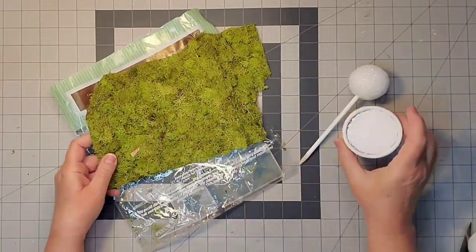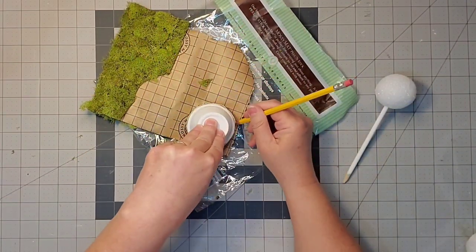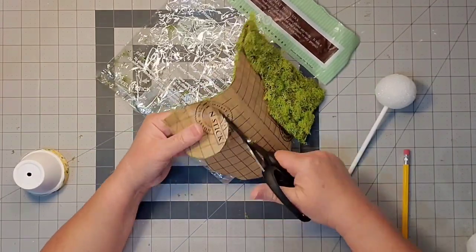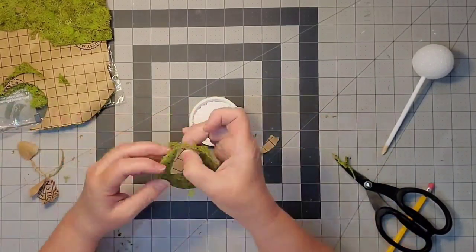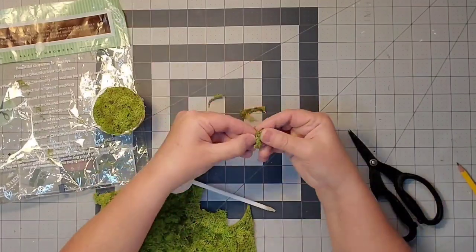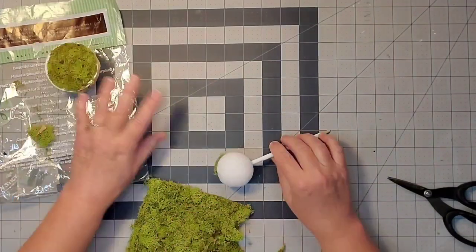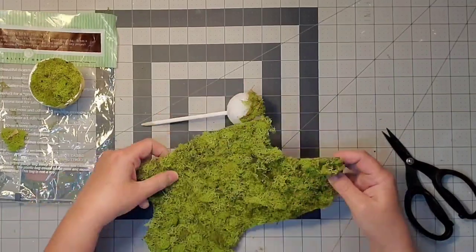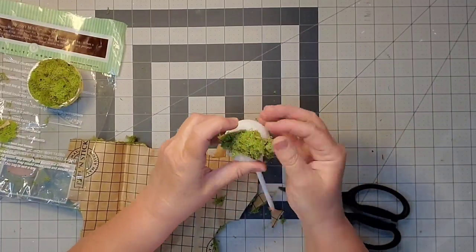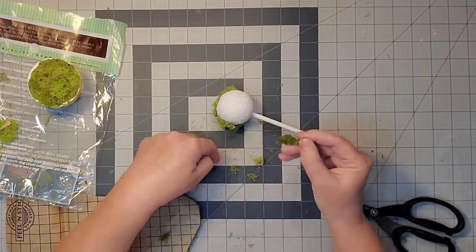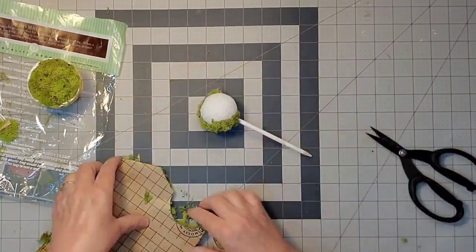I'm going to use this mossy mat. I'm still using the same package I've used on many projects. I'll trace out my pot and cut it out with scissors. Then I'll peel off the backing and place it right onto the styrofoam, attaching it to the sides of the pot as well. This stuff is really sticky.